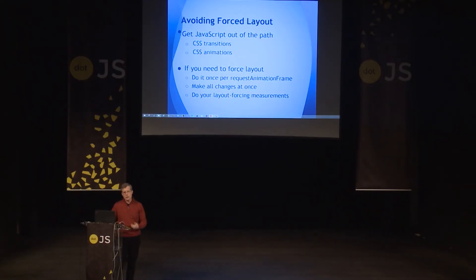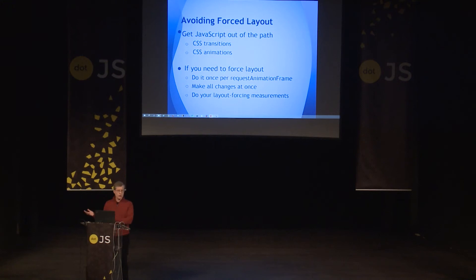To avoid forced layout, you want to get JavaScript out of the path as much as possible. You only want to write script when it's the best way to do something. For things like animations, jQuery used to be your go-to tool, but today you can do most of that with CSS transitions and animations. You don't get quite as much control, but in return you let the browser decide the best time to do those calculations. If you do need to force layout, you can use requestAnimationFrame, make all your changes at once every frame — roughly 16 milliseconds — and do your layout-forcing measurements then, rather than forcing layout several times during the same frame.